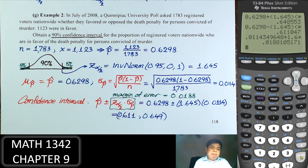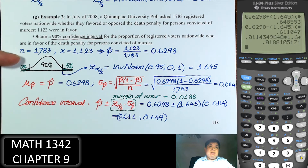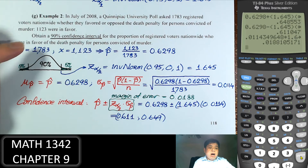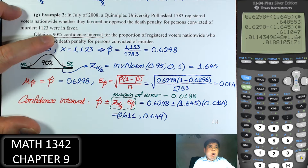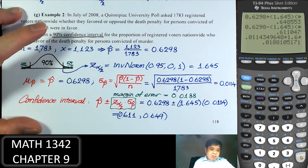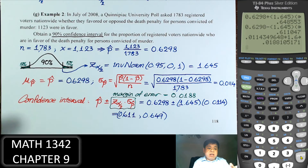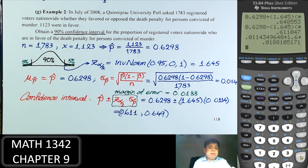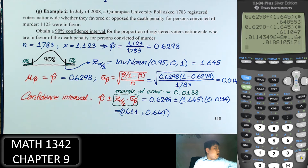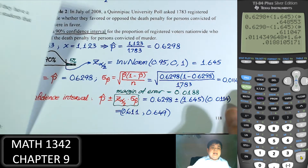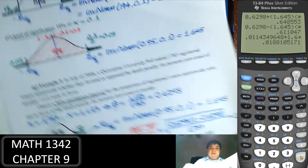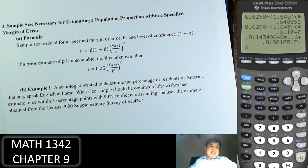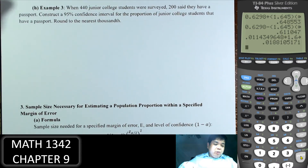To summarize the steps: given sample data, calculate p-hat; determine the desired confidence level and find Z-alpha/2; calculate the standard deviation of p-hat; then compute the confidence interval as p-hat plus or minus the margin of error. Later on we can just use the calculator directly, but for now it's important to understand the underlying calculations.